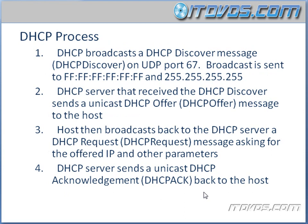Let's look at the DHCP process and exactly how it works. When we boot up a Windows 7 machine that's configured to have its IP address assigned automatically, it broadcasts a DHCP Discover message on UDP port 67. DHCP uses UDP. The broadcast is sent to FF:FF:FF:FF:FF:FF, which is the Layer 2 broadcast address, as well as 255.255.255.255, which is the all-hosts broadcast. The reason it can't use the broadcast address of the subnet is because it doesn't have an IP address yet, so that's why it uses 255.255.255.255.